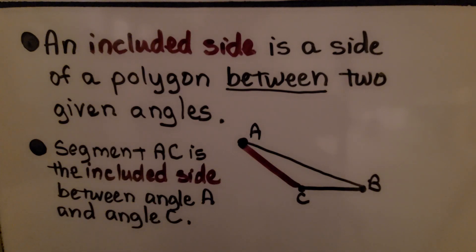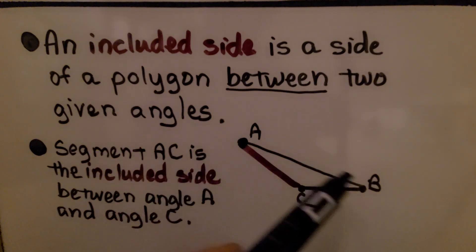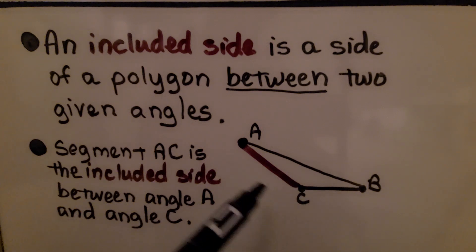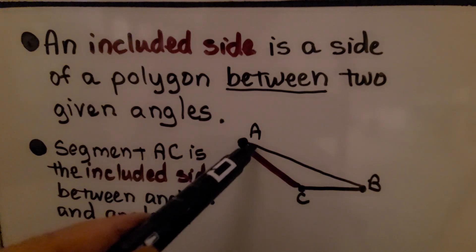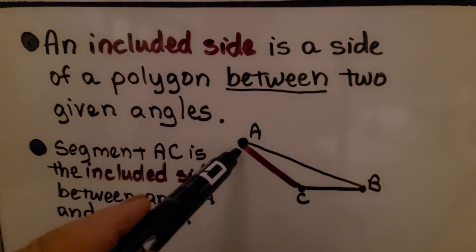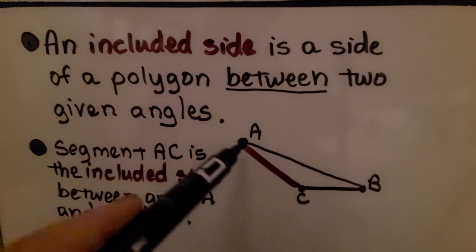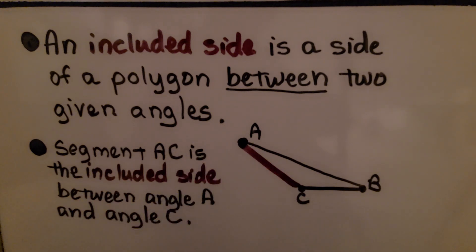An included side is a side of a polygon between two given angles. Here we have points A, B, and C. This is angle A and this is angle C. Segment AC, which is in between angle A and angle C, is the included side between angle A and angle C.